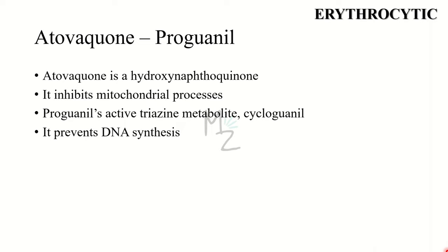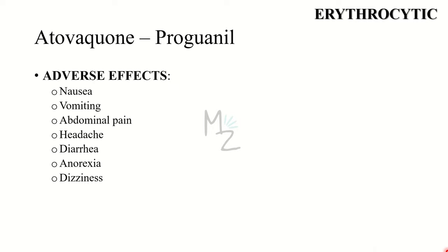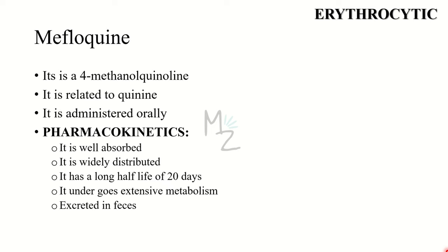The next drug is the combination of atovaquone and proguanil. Atovaquone is a hydroxynaphthoquinone that inhibits mitochondrial processes. Proguanil's active triazine metabolite cycloguanil prevents DNA synthesis. The combination is effective for chloroquine-resistant strains of Plasmodium falciparum and is used in the prevention and treatment of malaria for travelers from outside malaria-endemic areas. Proguanil is not routinely used in endemic areas due to its propensity for emergence of high-level resistance. The combination is given with food or milk to enhance absorption. Common adverse effects include nausea, vomiting, abdominal pain, headache, diarrhea, anorexia, and dizziness.